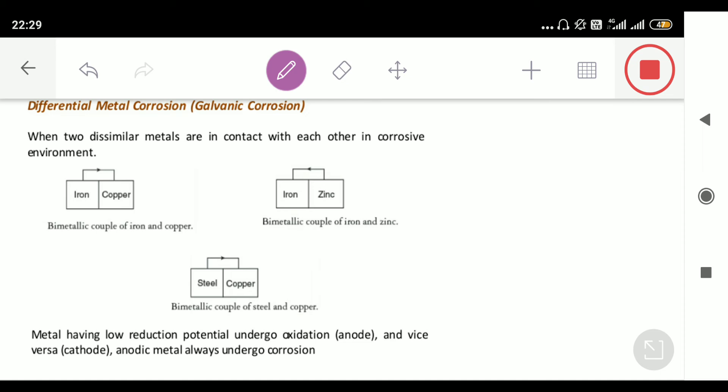This is very simple corrosion that we see in daily life. Now we have a new type of corrosion when the same metal is kept in contact with another metal. The rate of corrosion is totally different.